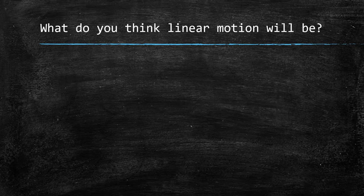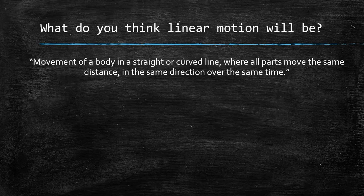What do you think linear motion will be? We've discussed it in previous videos. Take a few seconds — what do you think linear motion is? The answer is: it is movement of a body in a straight or curved line where all parts move the same distance in the same direction over the same time.